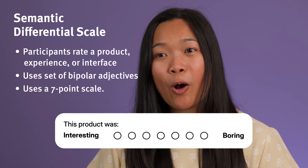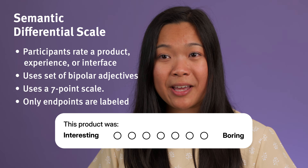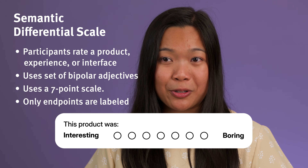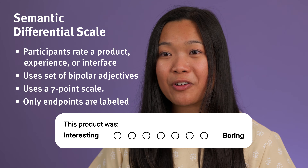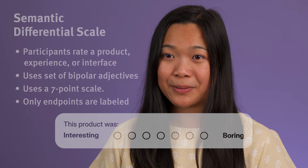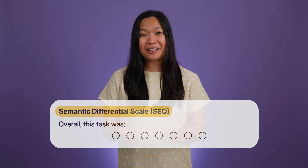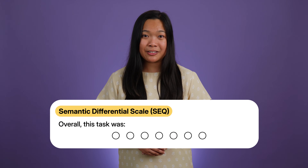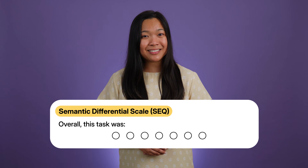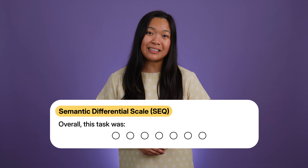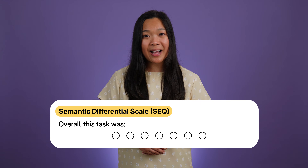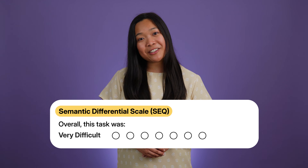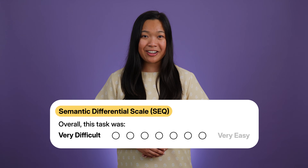In most cases, only the two endpoints are labeled, while the points in between remain unlabeled. A classic example of a semantic differential scale is the Single Ease Question. It asks participants to rate their attitude toward a task, often using a 7-point scale with two ends labeled 'very difficult' and 'very easy.'